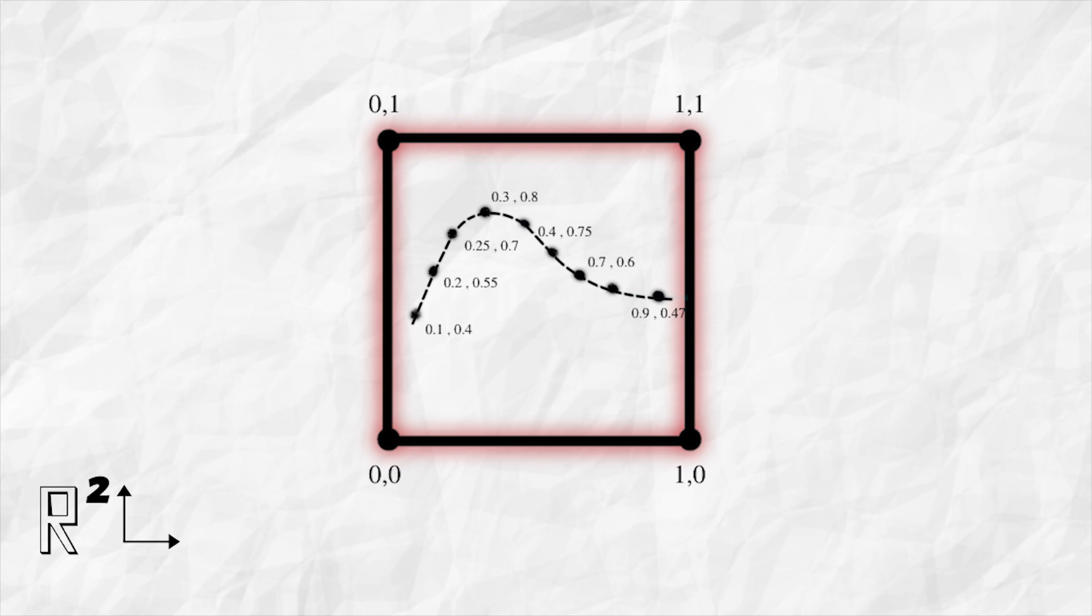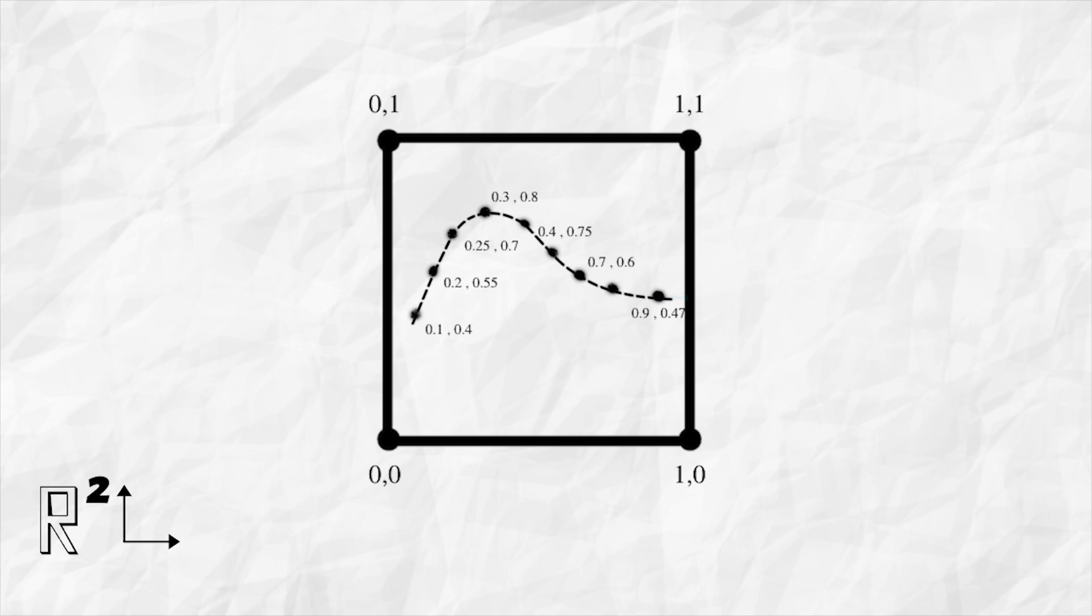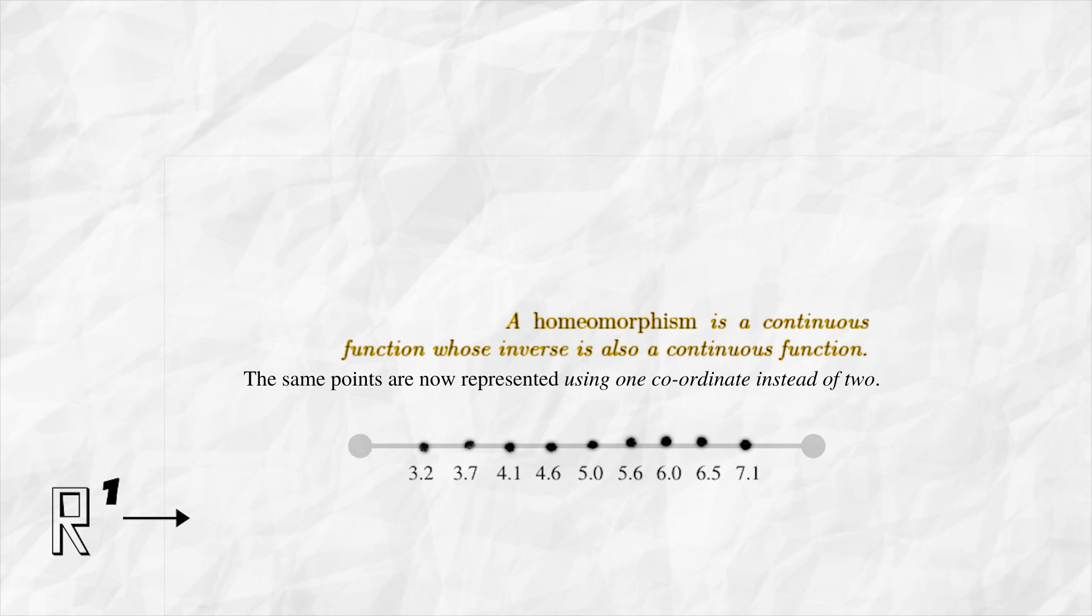We could represent each point using a local coordinate system on the manifold. In other words, this manifold lies in a two dimensional space but is homeomorphic with a one dimensional Euclidean space.